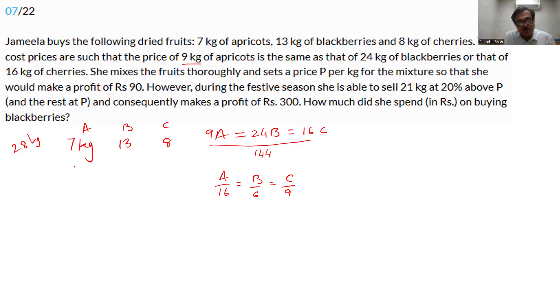So if the cost of the apricots is 16x, the cost of the blueberries would be 6x and the cost of the cherries would be 9x. The total cost would be 112x, 13 into 6 is 78x, 8, 9, 72x, which gives us a total of 8 to 10 to 12, 1, 6, 2, 2, 6, 262x.